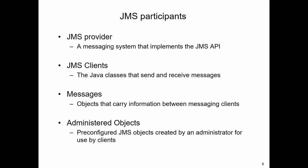There are four types of participants. The JMS provider is a messaging system that implements the JMS API. The clients are the Java classes that send and receive messages - we write those clients. The messages are the objects that carry information between the clients. And then we have administered objects, which are pre-configured JMS objects created by the administrator for use by clients. How those get created will vary - sometimes by manual intervention in the enterprise server, sometimes done automatically.